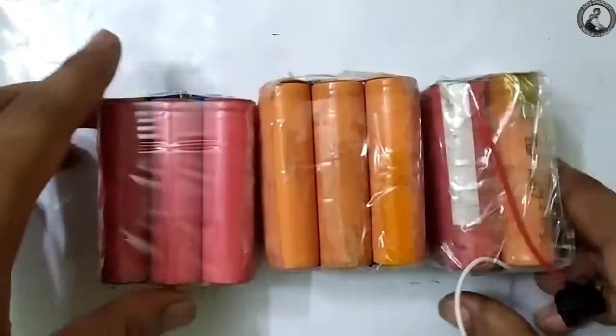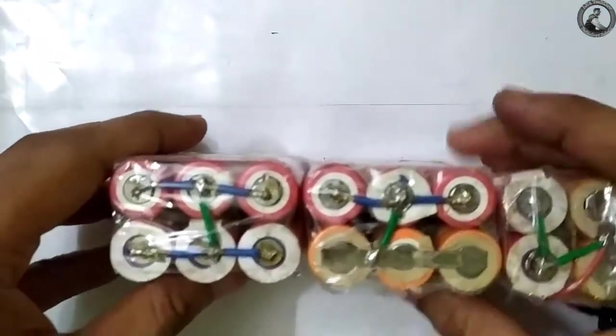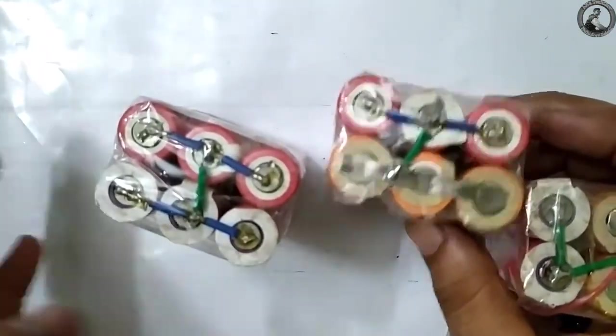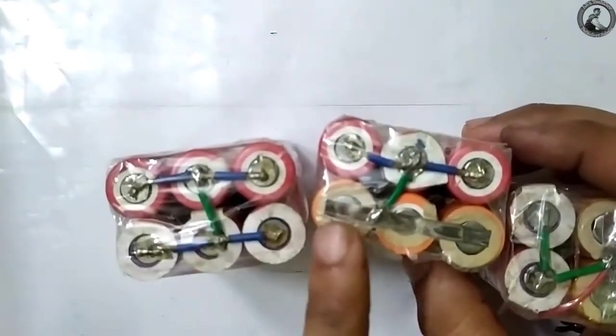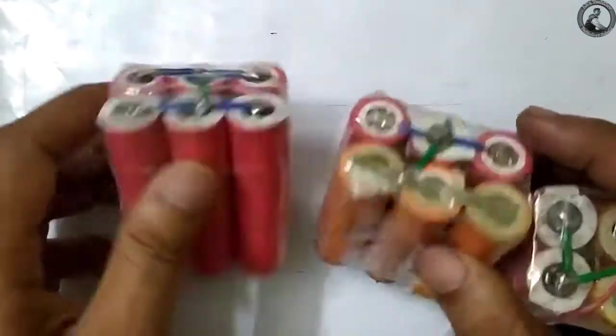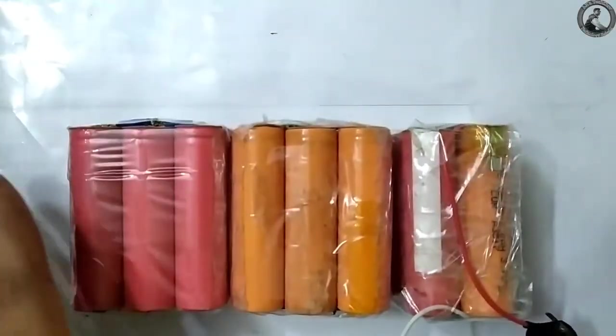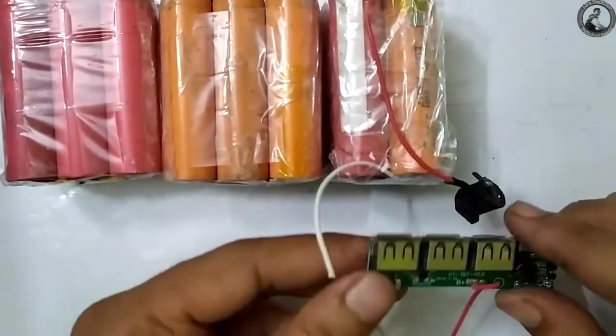To make this kind of power bank, first you need some old laptop batteries which are in good condition, or you can buy them new. Here I managed to collect 16 old batteries with 2000 mAh capacity each, so my power bank will have a capacity of 16 times 2000 mAh, that's equal to 32,000 mAh.